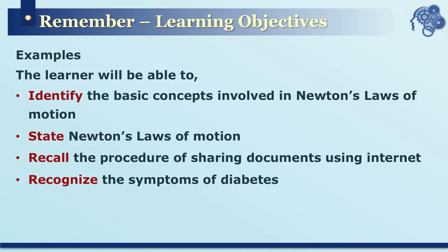Anderson and Krathwohl suggested that according to all these cognitive processes happening in the learner's mind, we need to design learning objectives so that educators can aim at invoking such cognitive activities. Examples of objectives at the remember level are: identify the basic concepts in Newton's Laws of Motion, state Newton's Laws of Motion, recall the procedure for sharing documents using the internet, and recognize the symptoms of diabetes.